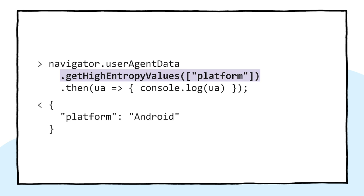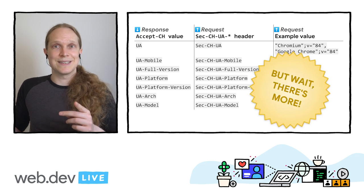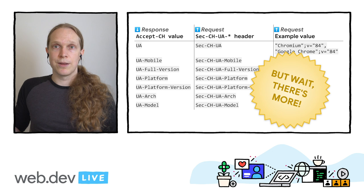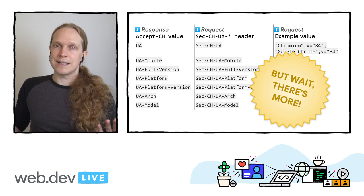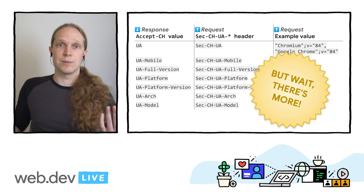There's one of these user agent hints to cover each of the bits of data that you can get from the string — so full browser version, platform version, device model, CPU architecture, on top of the significant version and that mobile indicator. There are also existing client hints that can give you things like device memory or viewport width. Because even if you're getting the data in the right way, it's easier to ask directly for the thing you want instead of using the user agent as a proxy.